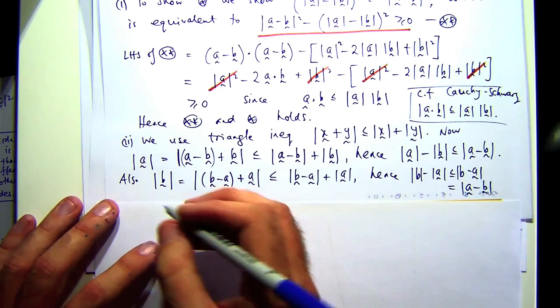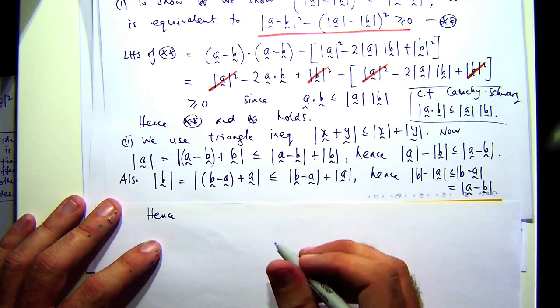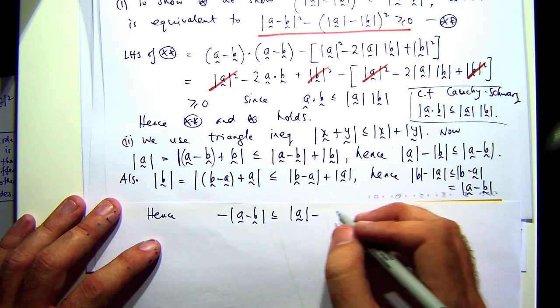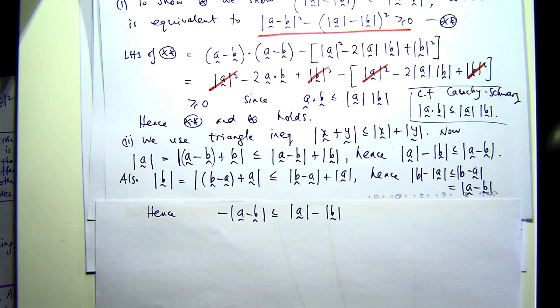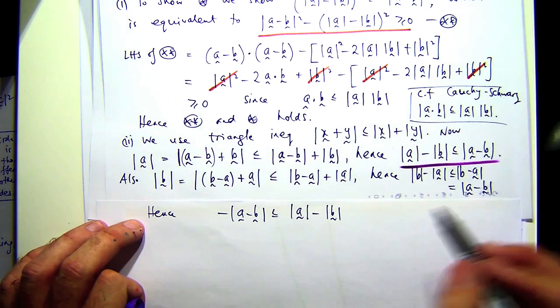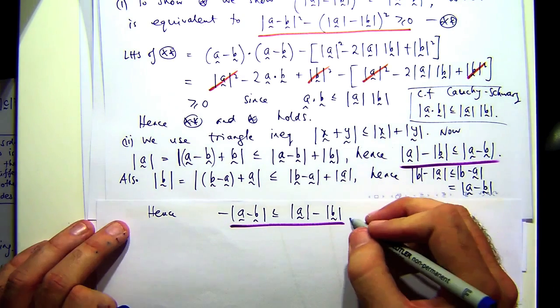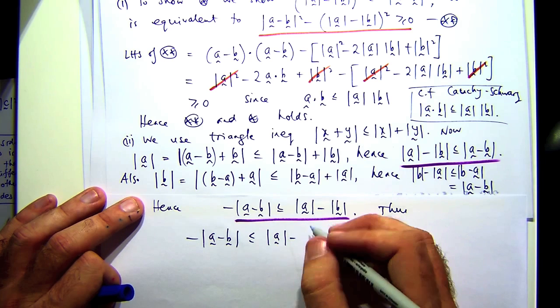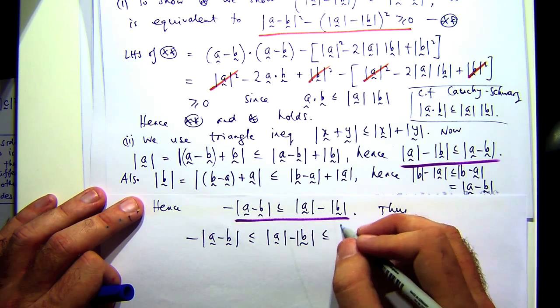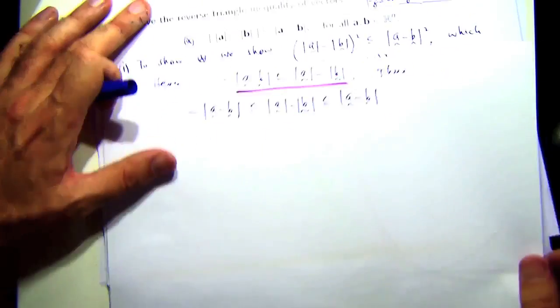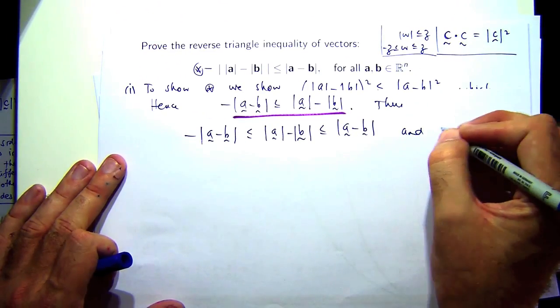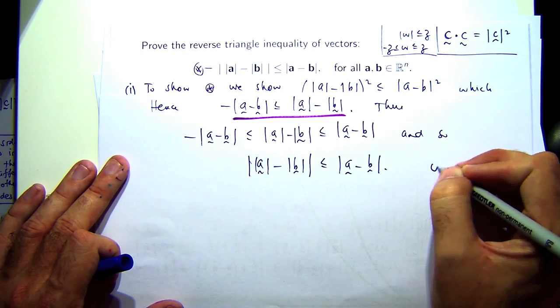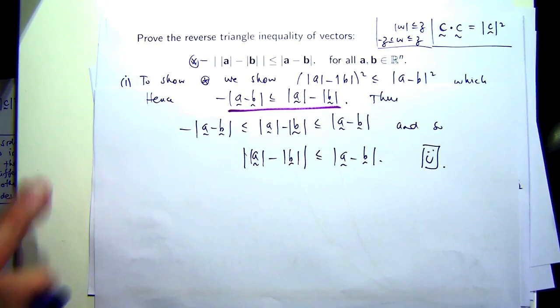So if I can rearrange that, I'll have the following. I'll have negative a minus b is less than or equal to this. So if I combine this and this, I can get the following. And I can reconnect those back to the absolute value. Now you have it. So that's two proofs.